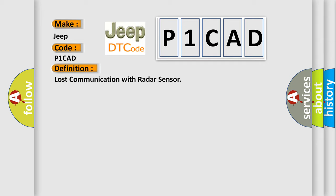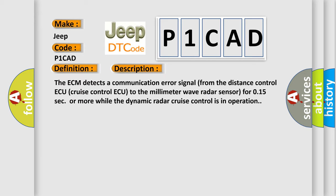And now this is a short description of this DTC code. The ECM detects a communication error signal from the distance control or cruise control to the millimeter wave radar sensor for 0.15 seconds or more while the dynamic radar cruise control is in operation.